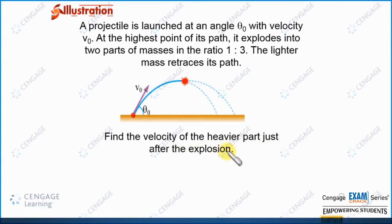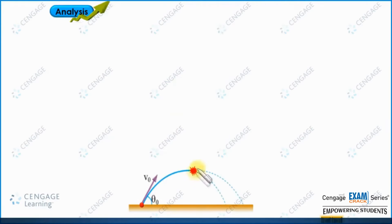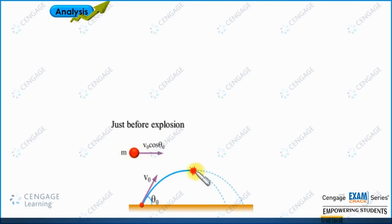Let us analyze the situation. This projectile is projected with initial velocity v naught at angle theta naught. We know in the case of a projectile, the horizontal component of velocity remains constant always. That means at the highest point, the velocity of the projectile should be equal to v naught cos theta naught. So let us make the diagram for this situation. Just before explosion, this particle should have velocity v naught cos theta naught. M is the mass of the projectile.